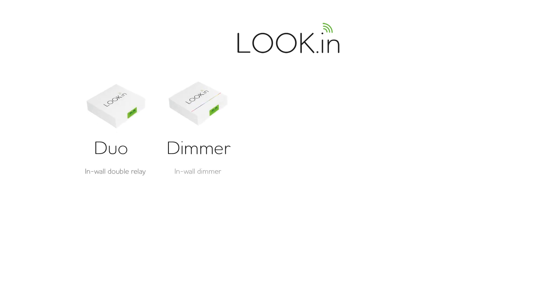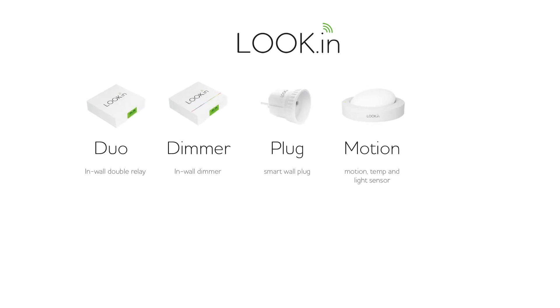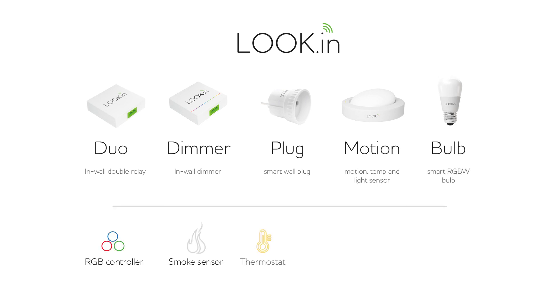The components of the first order of Look-in are: Duo, Dimmer, Wall Plug, Motion Sensor, and RGBW Bulb. Later this year, many other devices will also be available.